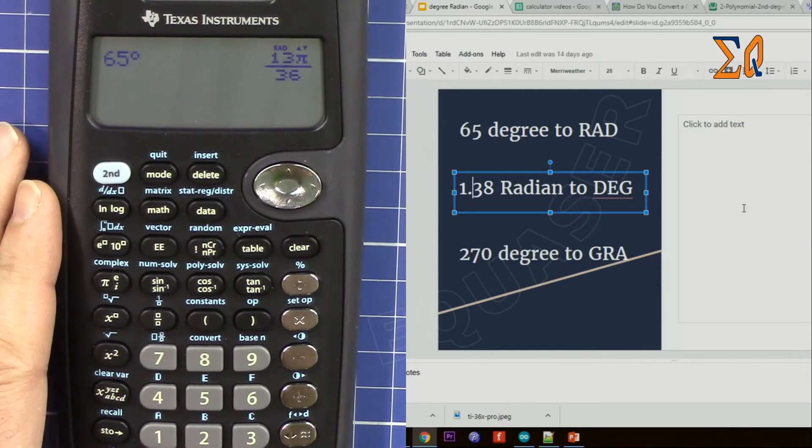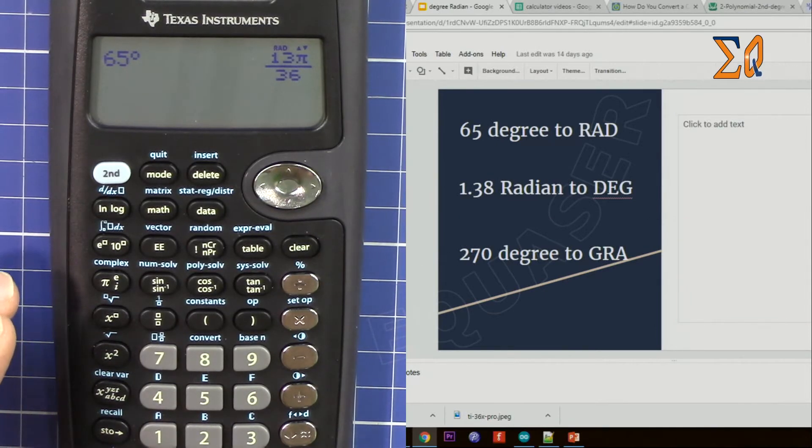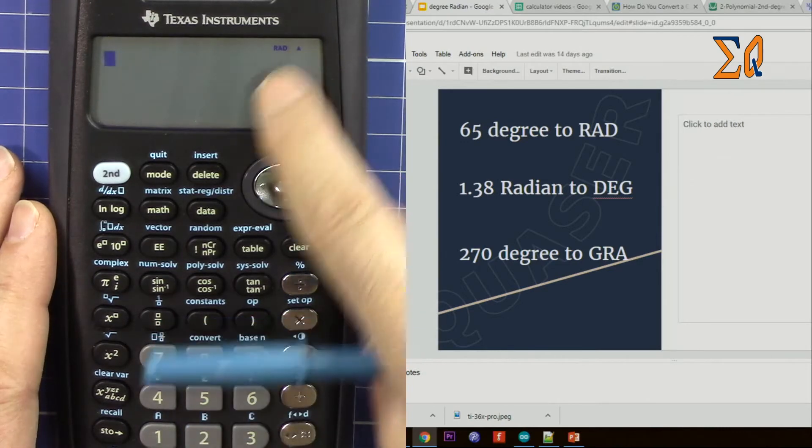And that says 1.38 radian to degrees. So first you have to go to degree mode. It's on degree, press equal, clear. Now we are in degree.